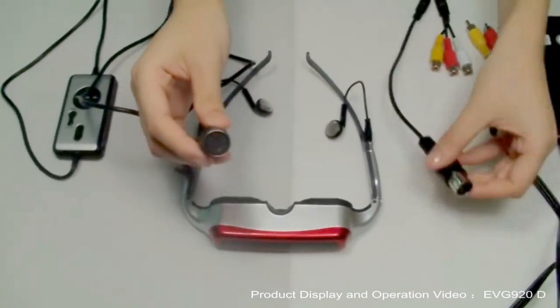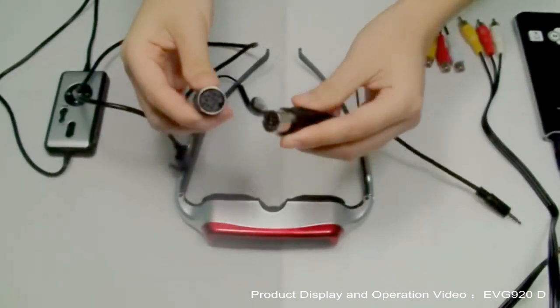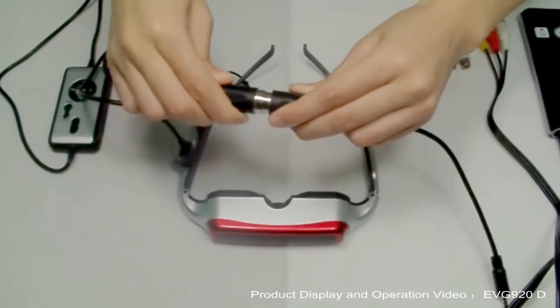Step 3. Next, we connect the AV cable with the well control.